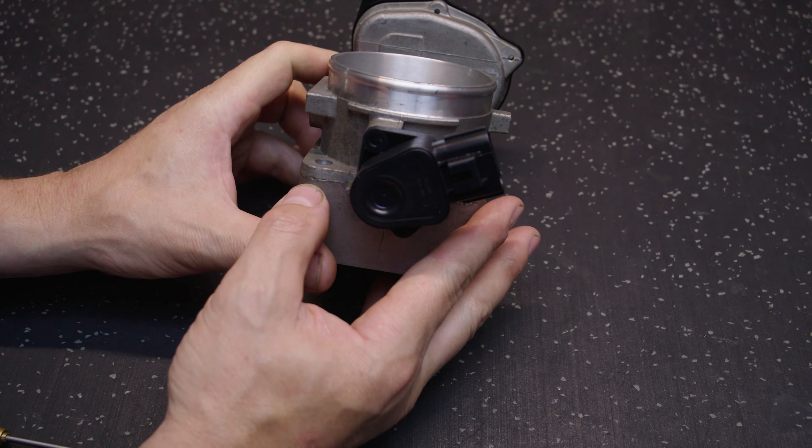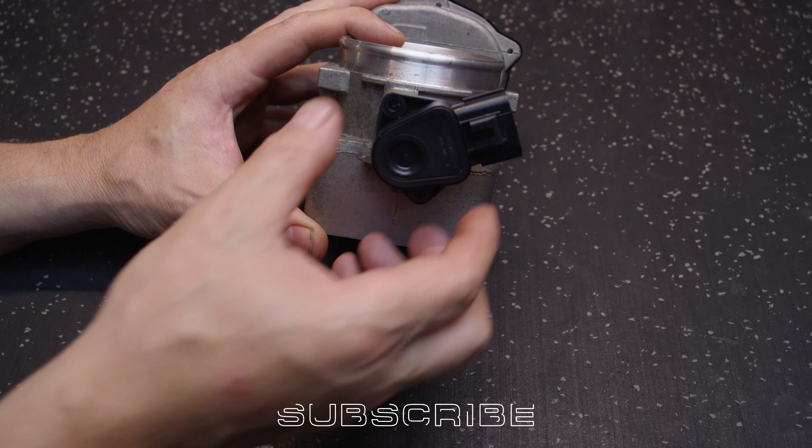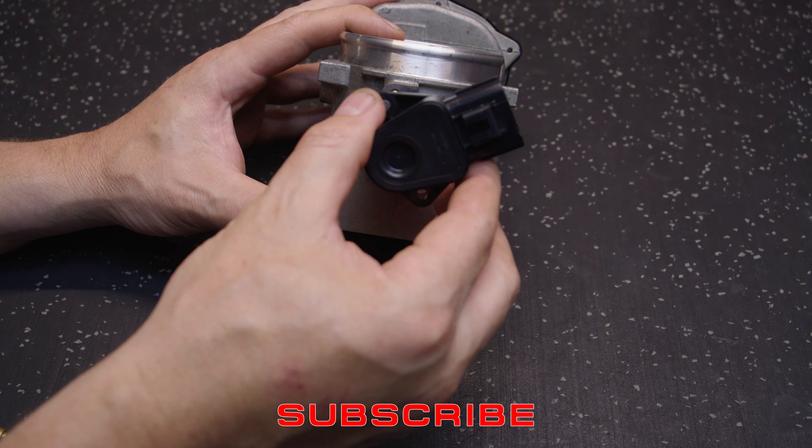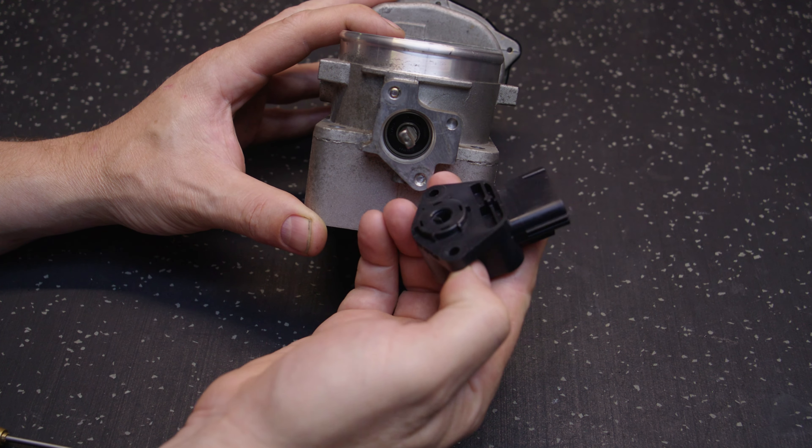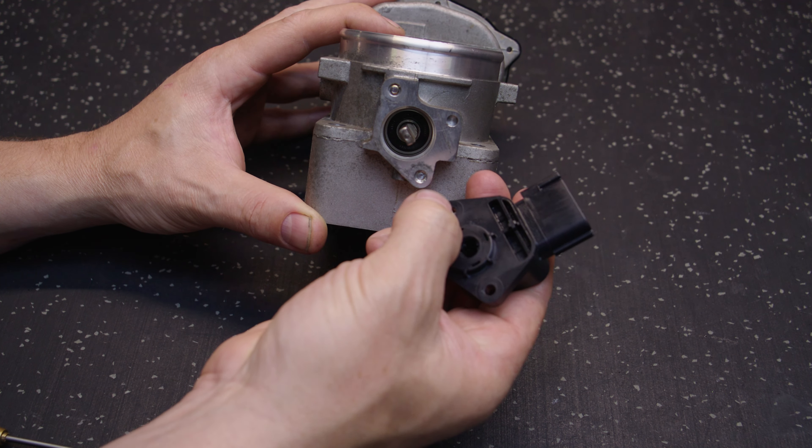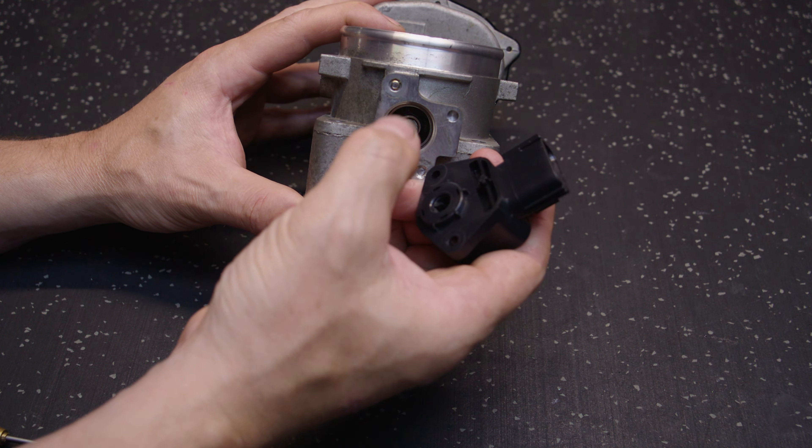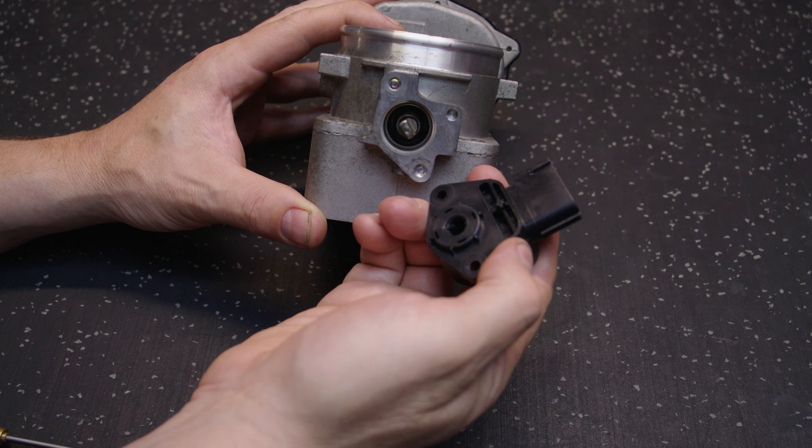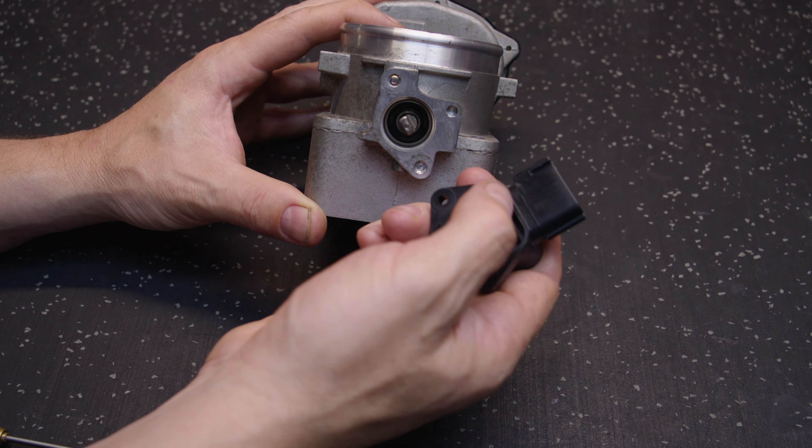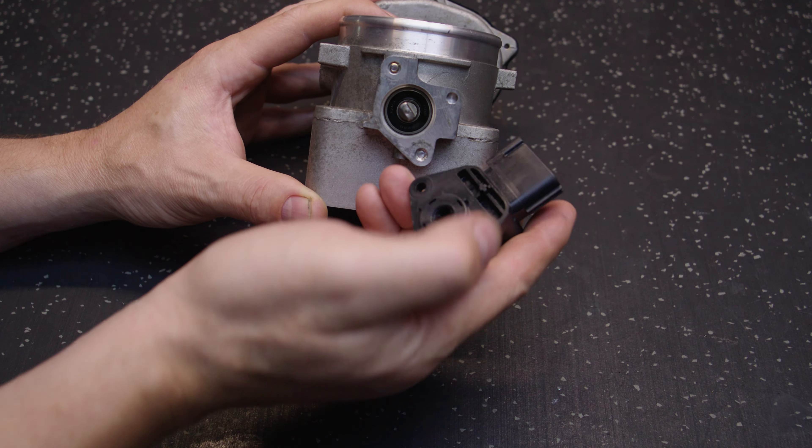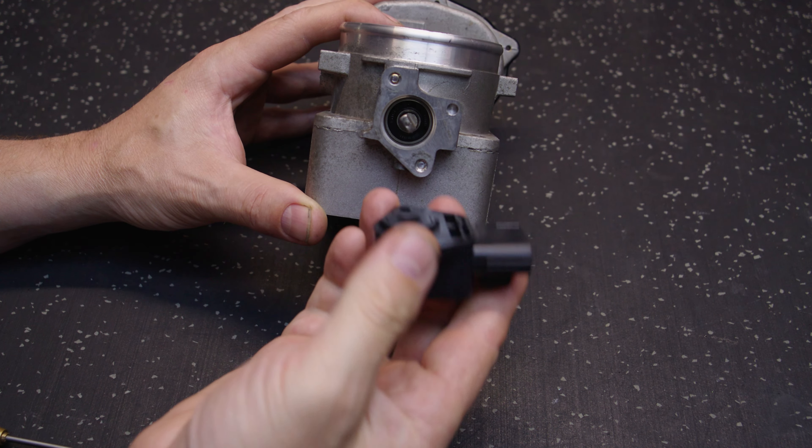Let's take a look at the problem area. Take the throttle position sensor off, noting its orientation. You've got the two mounting holes, the shaft which is the two flat-sided shaft coming off the butterfly shaft, and you've got this locator which is molded into the plastic, which locates in that hole. So there's only one way this goes back on.